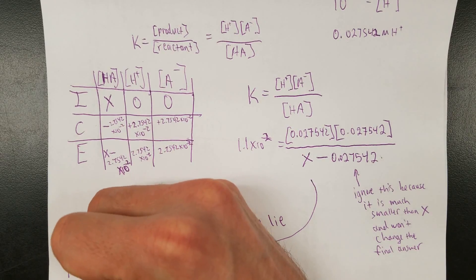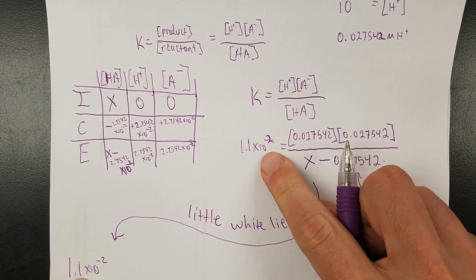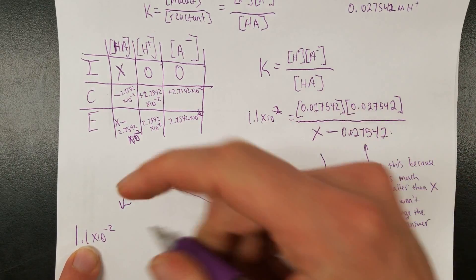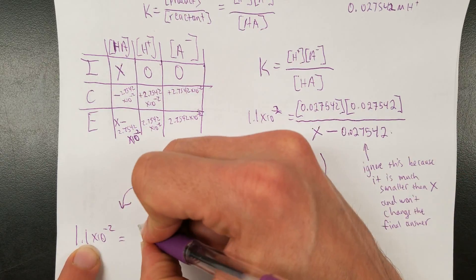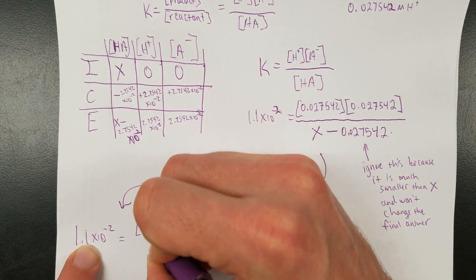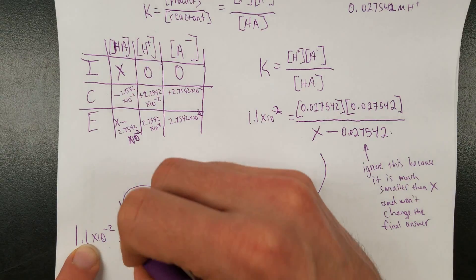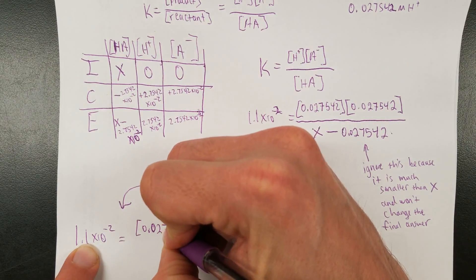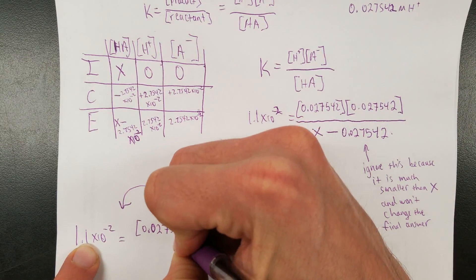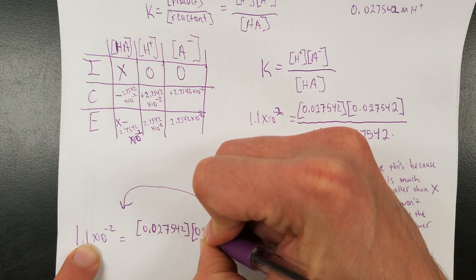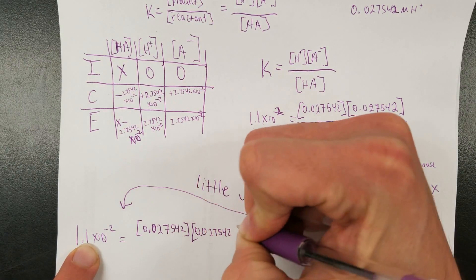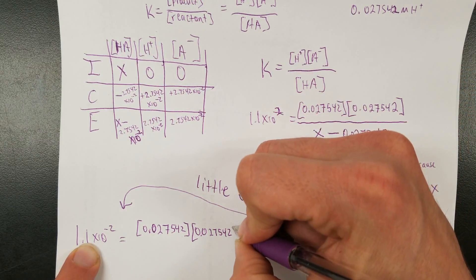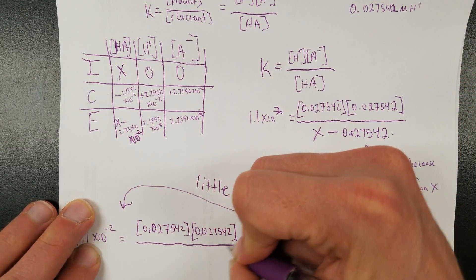We're going to say, my little white lie is that this doesn't matter and we can ignore it. That's a lie. It's not true. But whatever, we're going to say it's close enough for our purposes anyway. So 1.1 times 10 to the negative second, see the same one right here, is equal to, and see how this is the same number? 0.027542 times the exact same number again, 0.027542 divided by X.